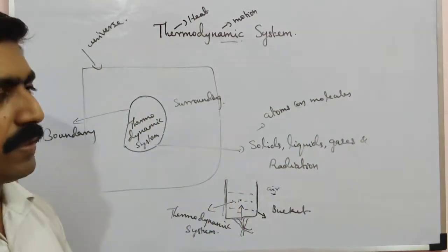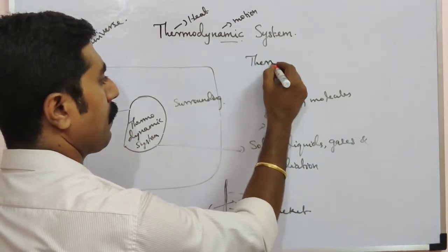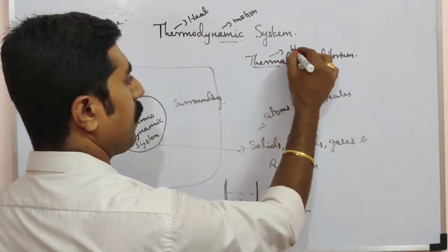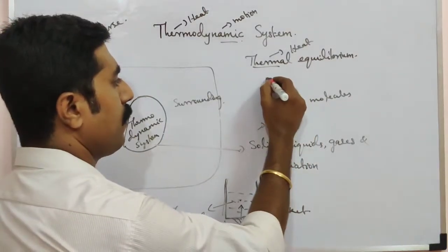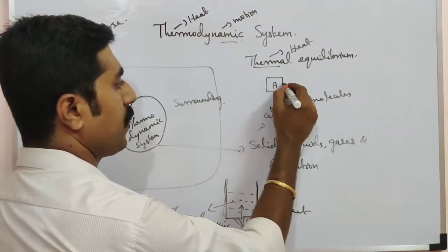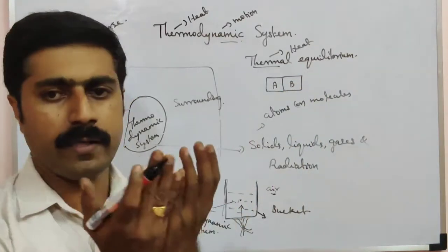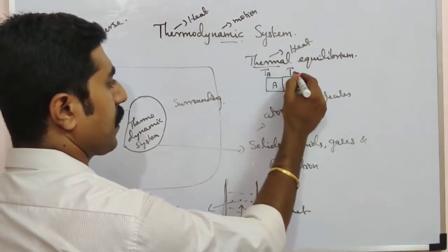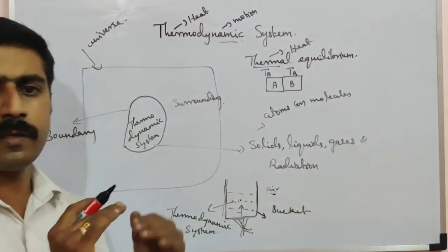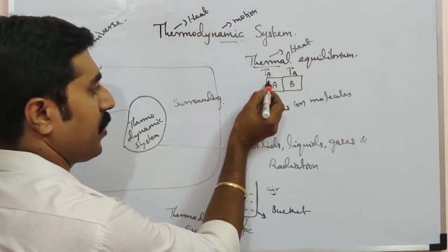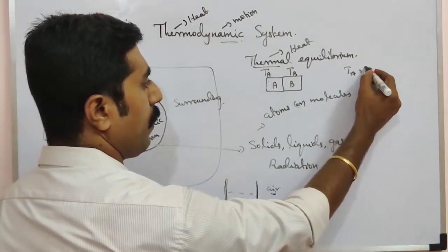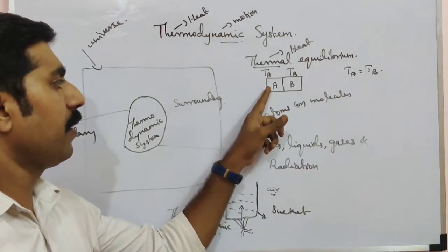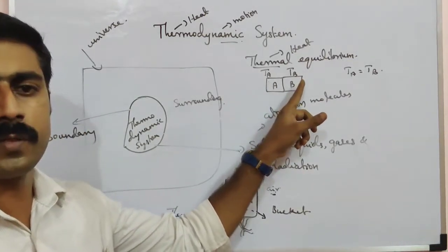The next concept is thermal equilibrium. For example, two objects are there — object A and object B. Both are in contact. The temperature of the first object is T_A and the temperature of the second object is T_B. When T_A equals T_B, there is no heat transfer from object A to object B or from object B to object A.